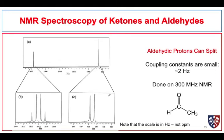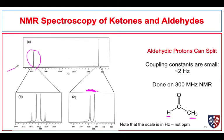Here is a proton NMR spectrum of acetaldehyde. It looks quite simple until we do the expansions. The peak that integrates for three protons is due to the alpha-carbon protons, and it is split into a doublet because it couples with the aldehydic hydrogen, with a small coupling constant of about 2 to 2.5 Hz. The aldehydic hydrogen far downfield shows a quartet because it couples with the three alpha protons — by the n+1 rule, three neighbors give a quartet.